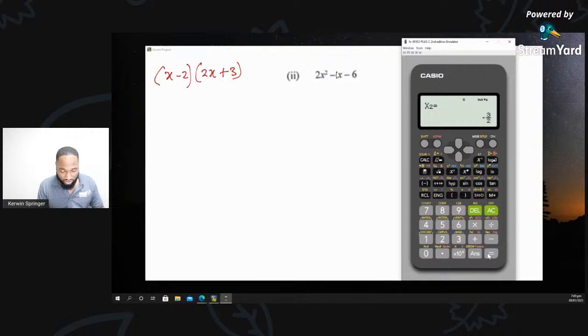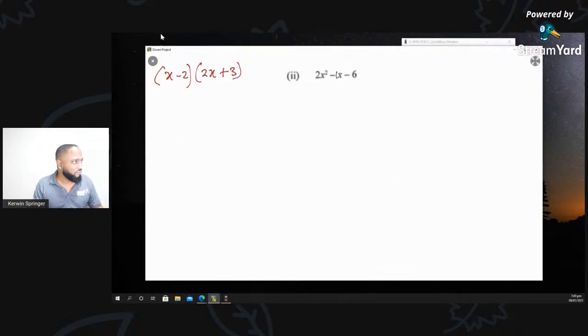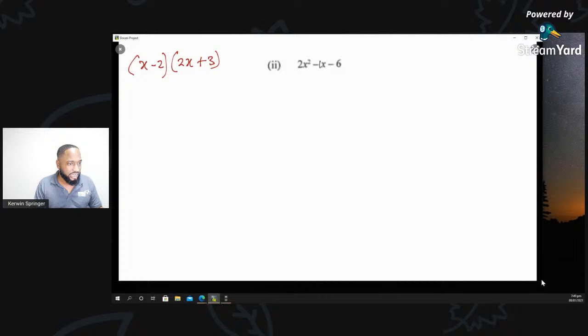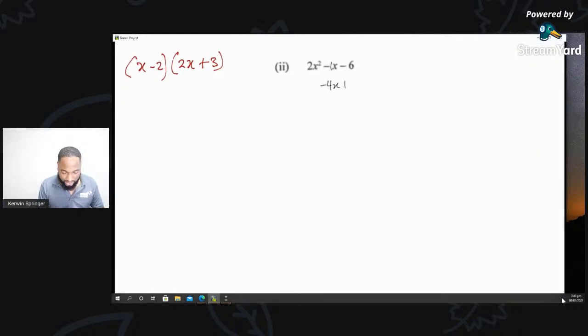Two numbers that have to give me negative 1 but multiply to give me 12, we should be seeing that those two numbers must be negative 4x plus 3x. If you want to know how to think of this from first principles, just go and watch my recorded video on quadratics. It's a video with about 42,000 views. Go watch that and you will be able to marinate on quadratics. So 2x² - 4x + 3x - 6. Then you factorize 2 at a time.